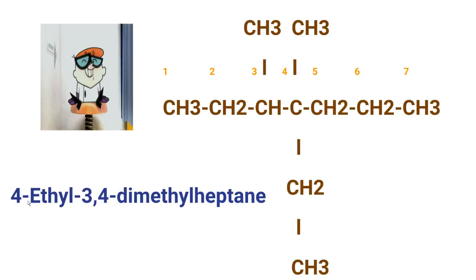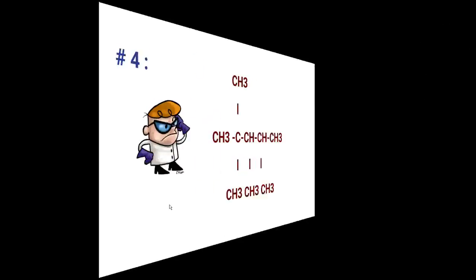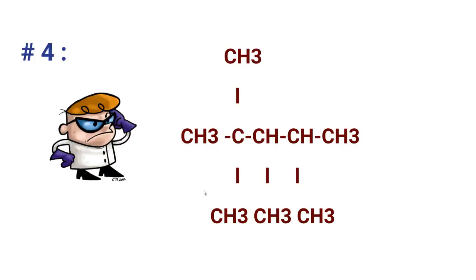The name is 4-ethyl-3,4-dimethylheptane because the longest chain consists of seven carbons, and ethyl comes before methyl because the rule states that substituents must be written alphabetically. When applying this rule, the prefixes di, tri, and tetra are ignored and not taken into consideration.